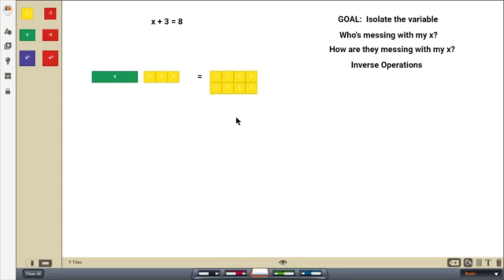Going back to our questions, who's messing with our x? This guy, these three, these positive threes. How are they messing with it? Through addition. How I'm going to undo it and make him stop messing around? Well, I'm going to do the inverse operation of subtracting three. So we have one, two, three. Okay. So that's our next step.